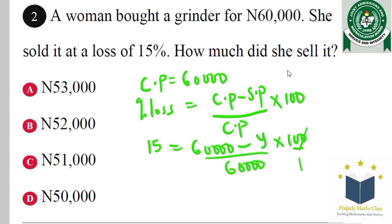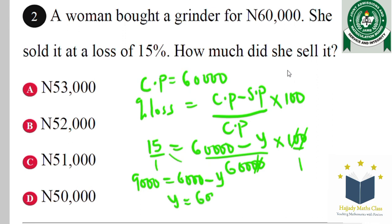Don't forget, you can cancel the two zeros. So we have 15 multiplied by this. By cross-multiplying, we get 9,000 — that is 15 multiplied by 600 equals 6,000 minus Y. So finally, Y will be 6,000 minus 9,000... so Y is going to be 51,000.